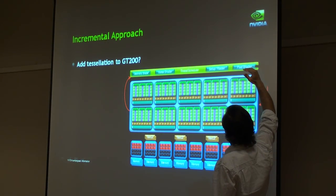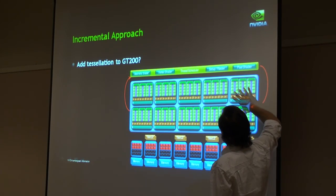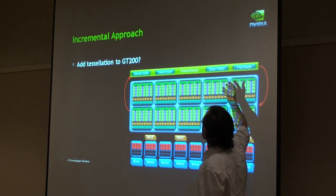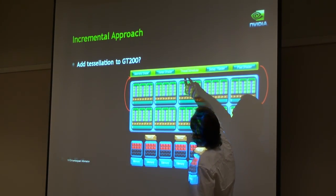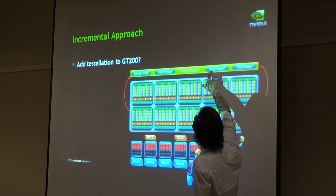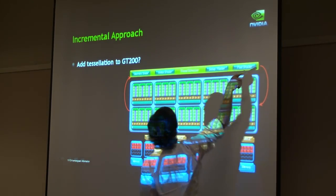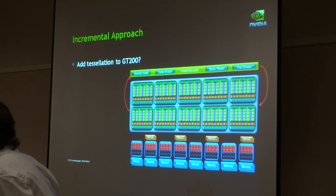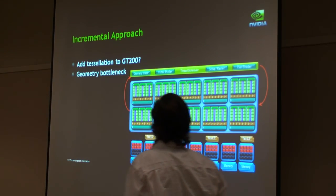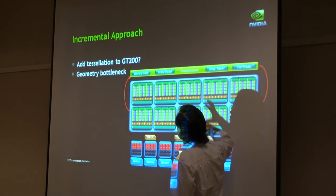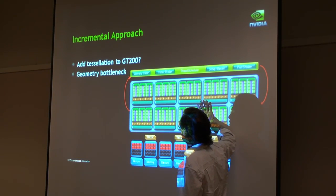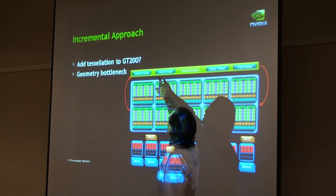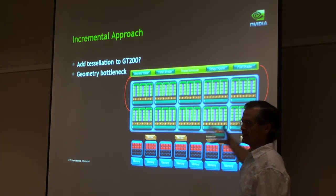Fixed function processing blocks that are in GT200 exist outside of the core processor. And if we were to add tessellation to it, we'd probably stick it up here, in this section where we have setup and rationalization, where we have the control for the various shader types. But there are problems with doing this. As you go from shader stage to shader stage, all of the data describing the geometry has to leave the processor core, make its way up into this unit, and then come back down into it for the next shading stage.